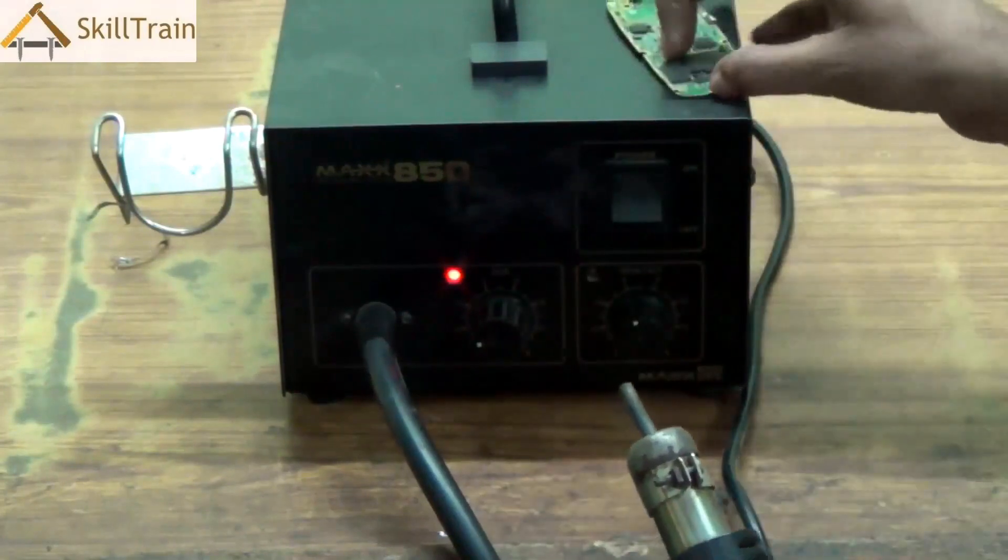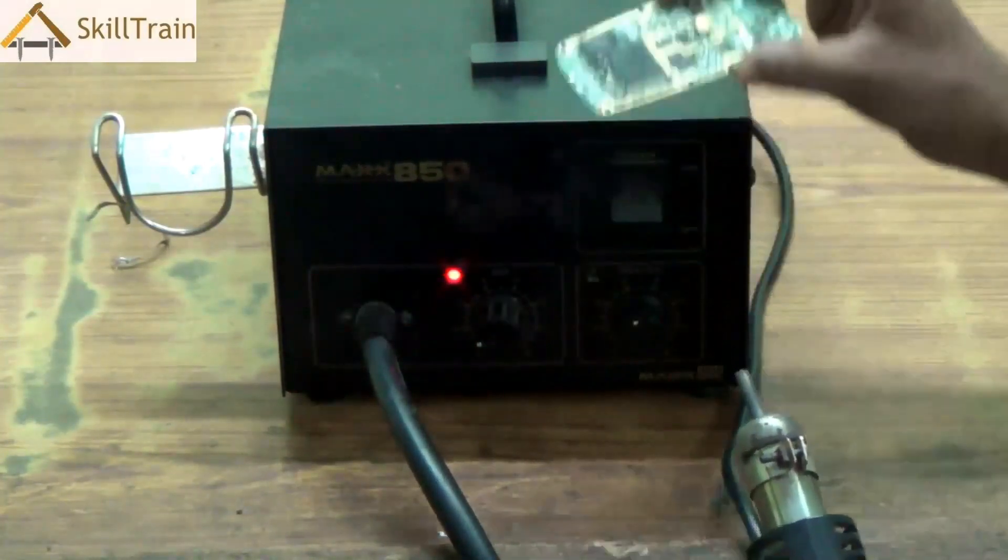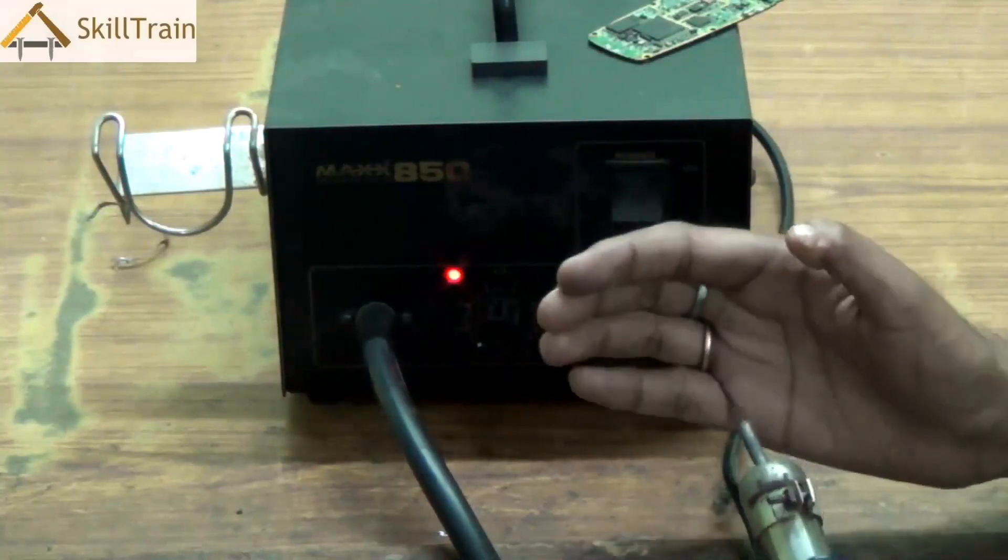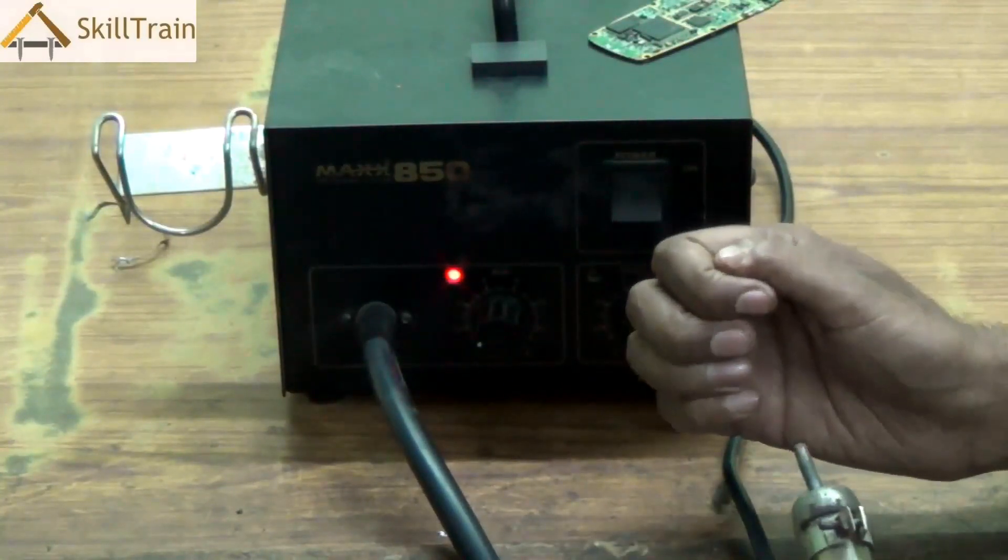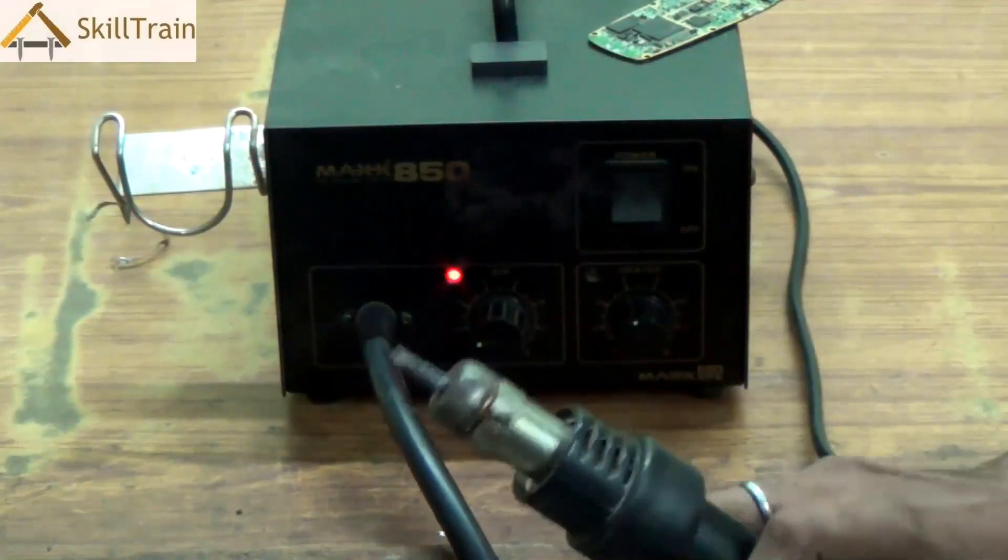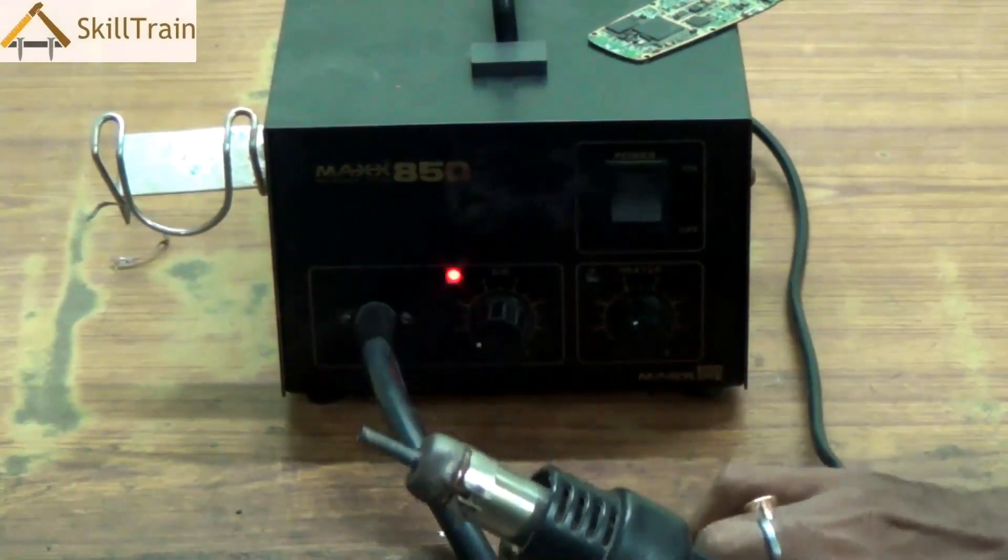So when you are using it on a PCB, you blow the gun or place the nozzle towards the component that needs to be removed. And using tweezers, you would be able to easily remove these components from a PCB.